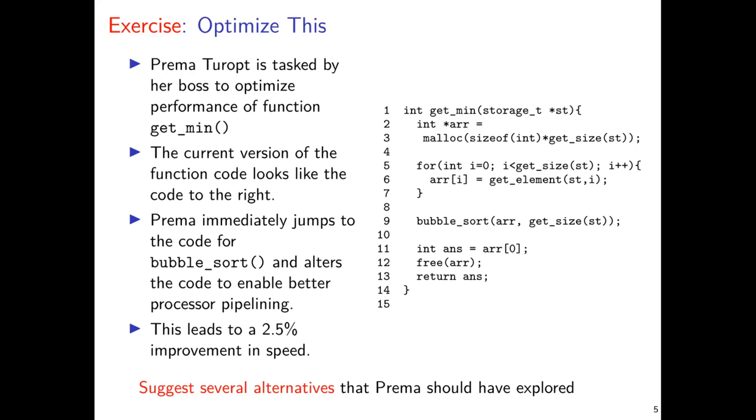To start this whole rigmarole out, here is an example of a young programmer named Prima. Prima is asked by her boss to optimize the performance of the following C code that's over here called get_min. Prima immediately identifies that there's a function call in here called bubble_sort. After zealously studying the Bryant and Halloran Chapter 5, she jumps into that code and starts rearranging loops because she knows this can potentially lead to better processor pipelining, and this leads to an overall 2.5% improvement in speed.